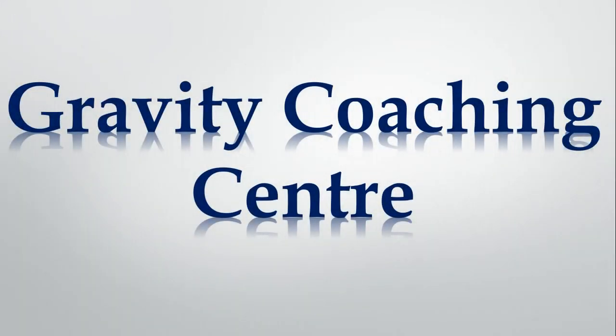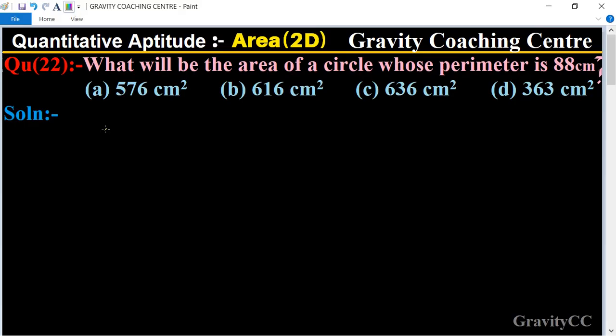Welcome to our channel, Gravity Coaching Center. Quantitative Aptitude, Chapter Area, Question number 22: What will be the area of a circle whose perimeter is 88 centimeter? In this question, given perimeter is 88 centimeter, so what will be the area?